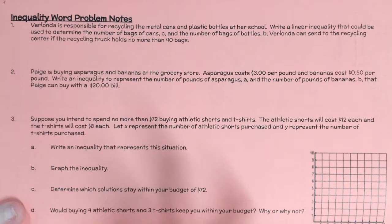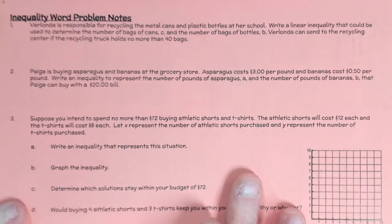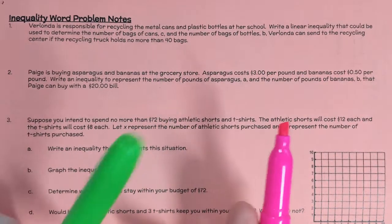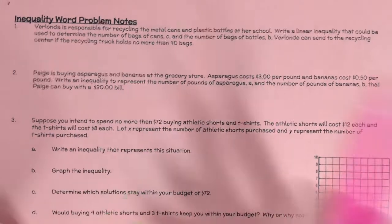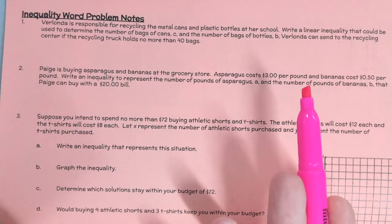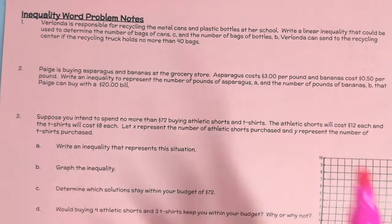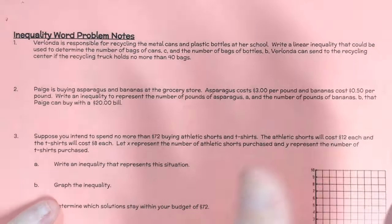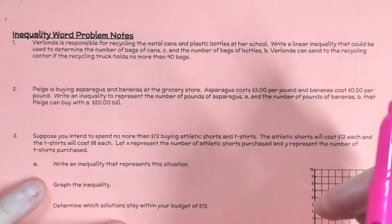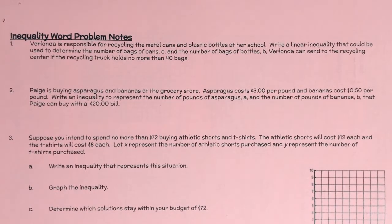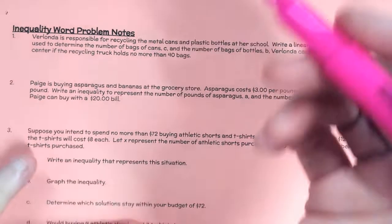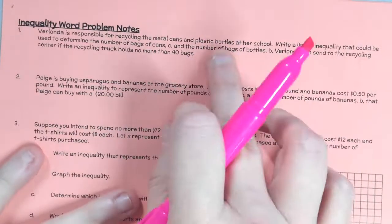When we solve inequality word problems, I use two highlighters to help me. The reason for that is when I'm writing any word problem, I need at least two highlighters because I've got to keep track of what's happening. I start by finding the variables — sometimes they'll define them for me, sometimes I have to define them myself. In this case, they tell me what the variables are.